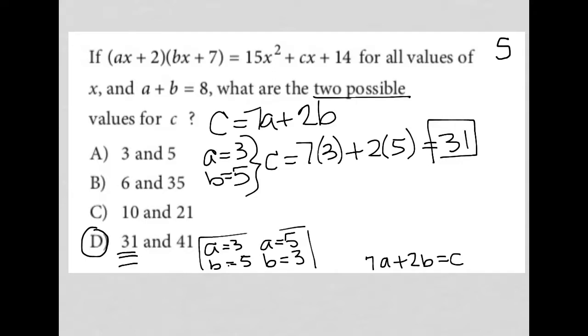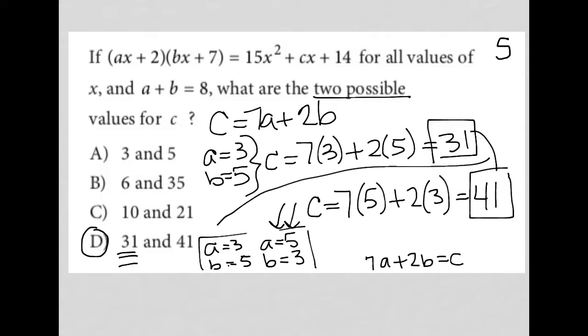Well, the other possible value comes from the other scenario for a and b. So in this case, c would equal 7 times 5 plus 2 times 3, where 7 times 5 is 35. 2 times 3 is 6. 35 plus 6 is 41. So here's our other option, which again, these in concert tell us that choice D is the correct answer.